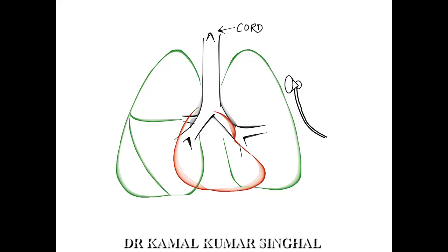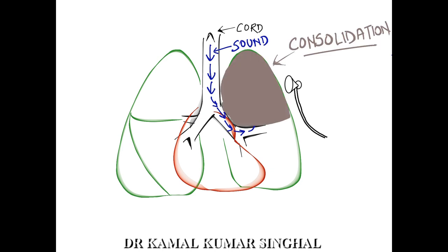Vocal resonance refers to the sounds auscultable over the chest when the patient generates sound from the larynx. When these sounds pass through the airways and lungs, the higher frequency components get filtered off. However, when there is consolidation, a relatively solid lung does not filter off these frequencies and sounds produced at the larynx are transmitted with good clarity.